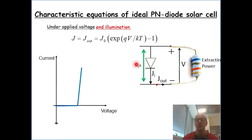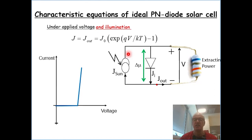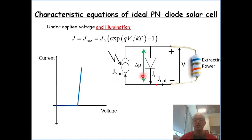We know that the Sun would act as an equivalent current source, where charges are being separated and driven to their respective contacts. And this is the equivalent circuit of an ideal diode.